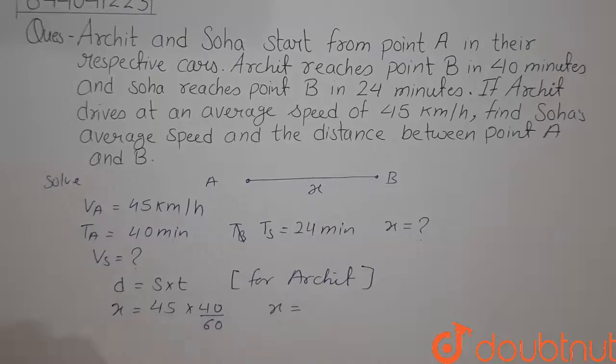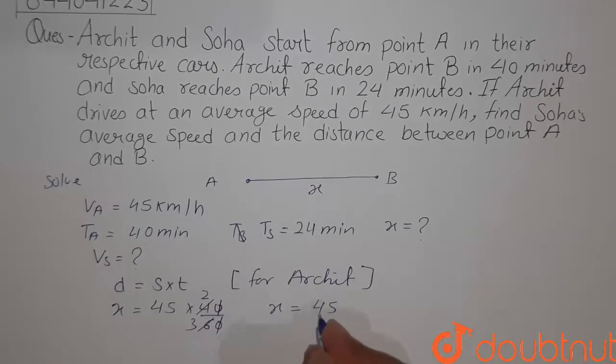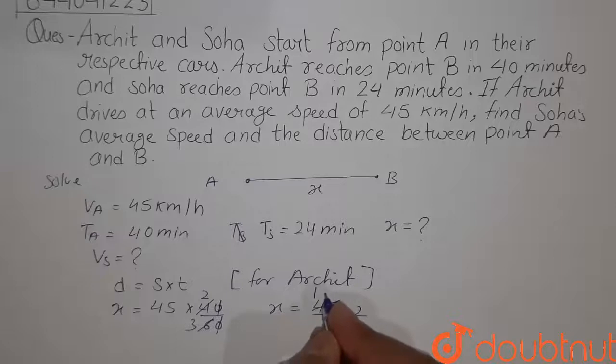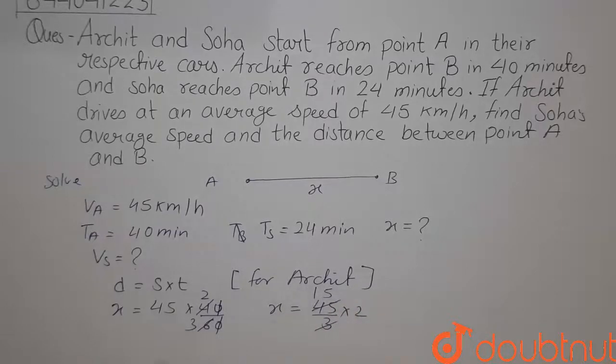X equals 45 times 40 over 60. The zeros cancel out, 4 by 6 gives us 2 by 3. Then 45 upon 3 into 2, which is 15 into 2, that is 30. So X equals 30 km. The distance between the two points is 30 km.